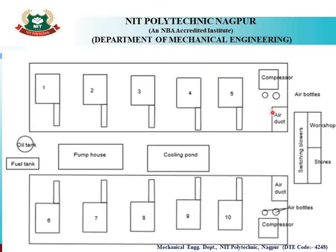A central compressor unit supplies compressed air to all engines, numbered 1 through 5 and beyond. Other systems such as oil tanks, fuel pumps, cooling ponds, switching gear, blowers, workshops, stores, and offices are centralized. This centralized arrangement makes it easy to access and maintain engines from both left and right sides, and to keep running condition records.